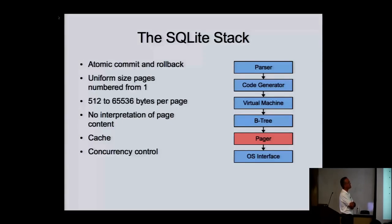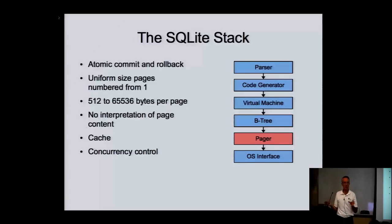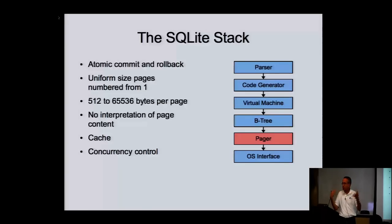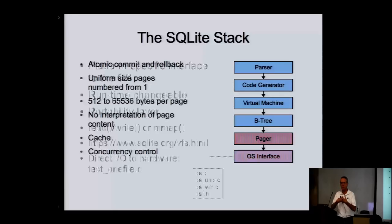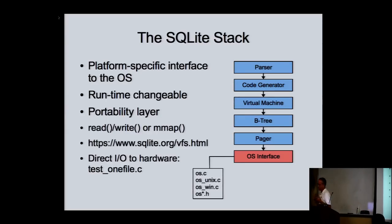Next down is the pager layer — this is the part that implements your transactions, atomic commit, and rollback. The pager views the database as a bunch of pages numbered starting with one (page zero is like our null pointer). The page size is a power of two between 512 and 64K. The pager has no idea what the content of the pages is — it's just managing pages and dealing with transactions. It also provides concurrency control, since with SQLite you can have multiple processes talking to the same database file at the same time with no server controlling them.